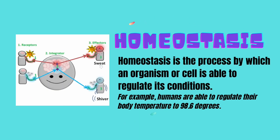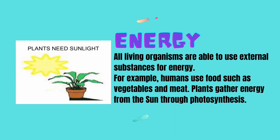Homeostasis is the process by which an organism or cell is able to regulate its conditions. For example, humans are able to regulate their body temperature to 98.6 degrees. All living organisms are able to use external substances for energy. For example, humans use foods such as vegetables and meat, while plants gather energy from the sun through photosynthesis.